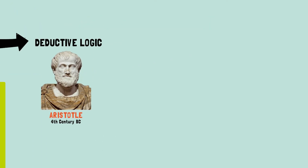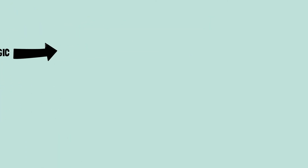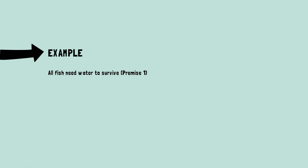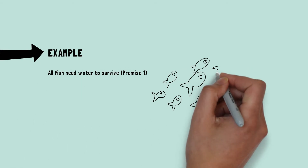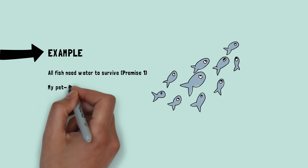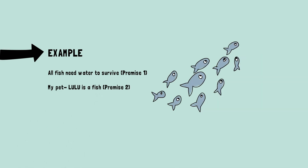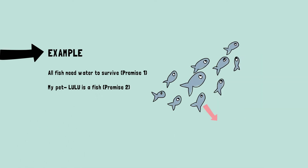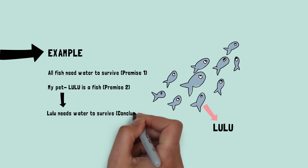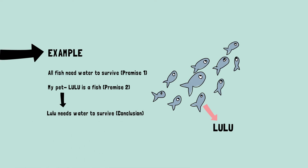Here is an example of deductive reasoning. All fish need water to survive. My pet Lulu is a fish. Therefore, Lulu needs water to survive.